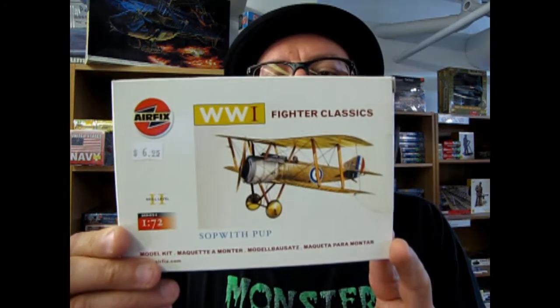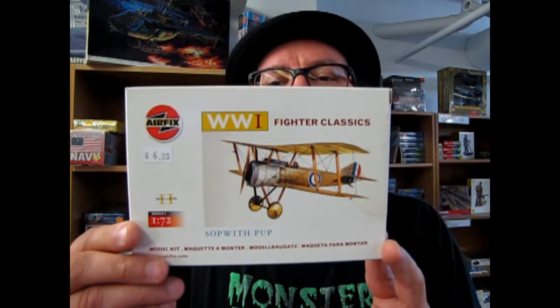Hello everybody, my name is Trevor Rusleski and welcome to another episode of Monster Hobbies What's in the Box where tonight we are going to look at the Airfix Sopwith Pup from October 1916. Well the model kit is not but the aircraft itself is. So without further ado let's go down and see what's in the box.